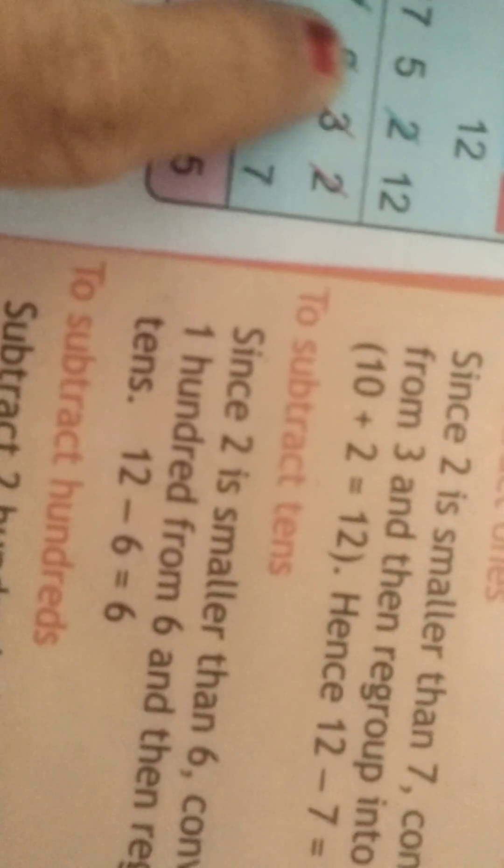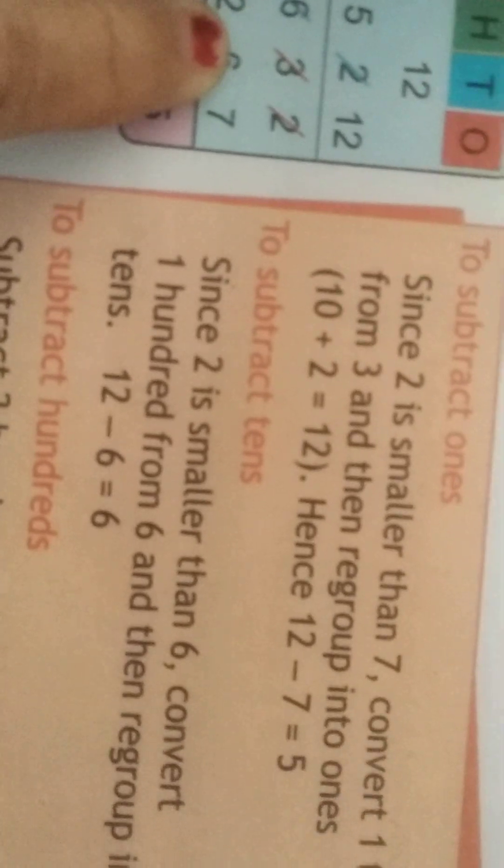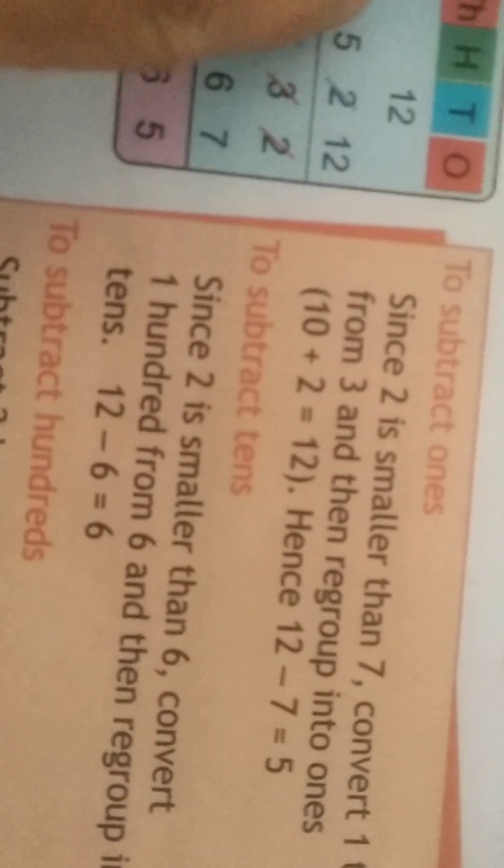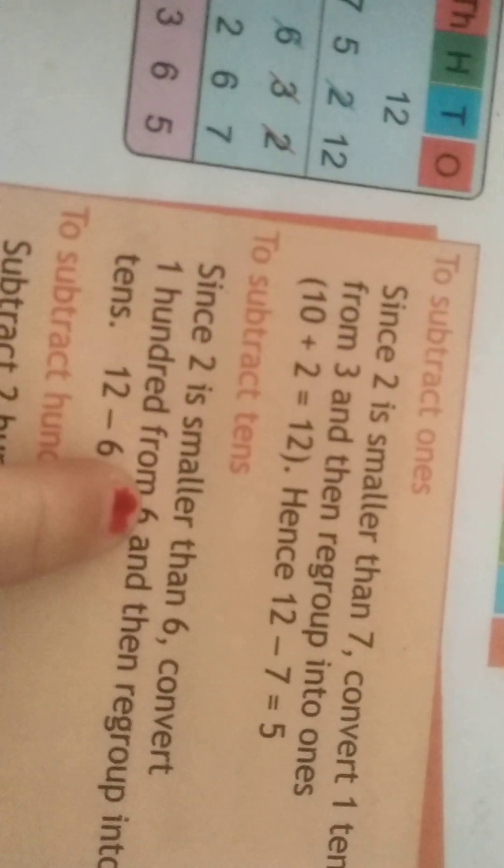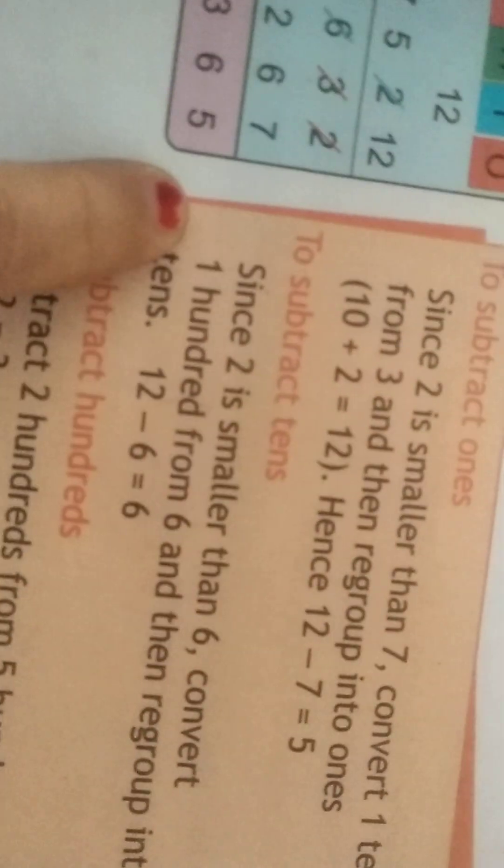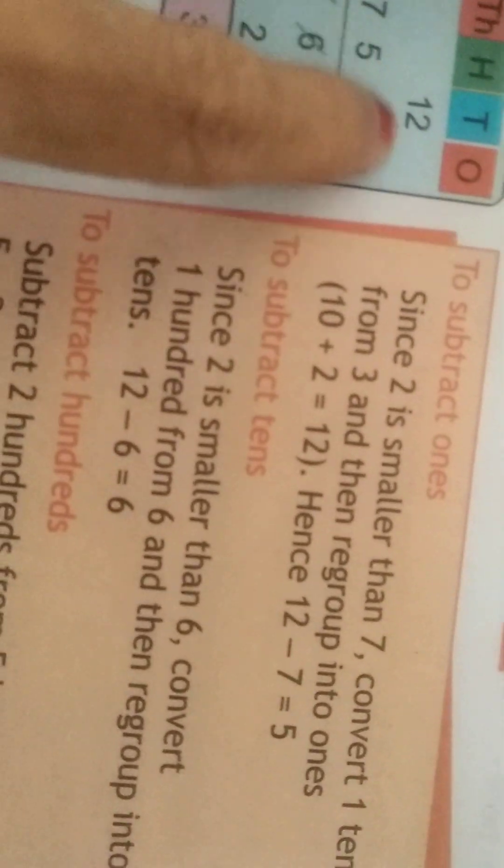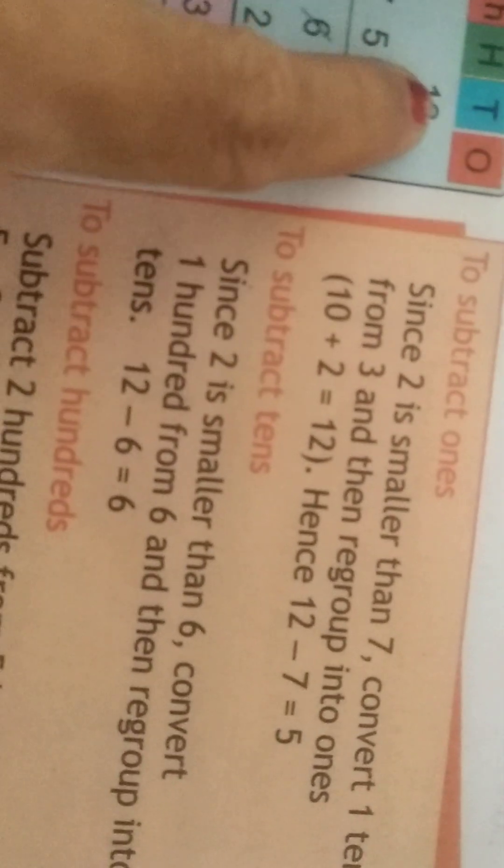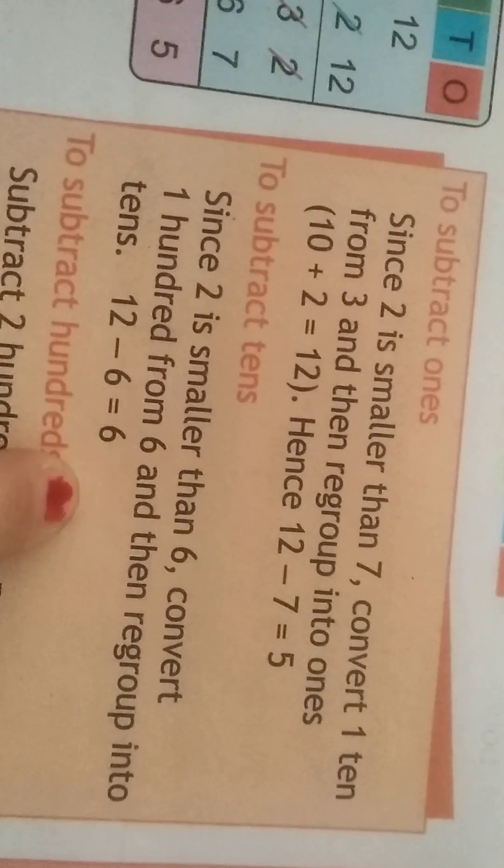To subtract tens, since 2 is smaller than 6, convert 1 hundred from 6 and then regroup it into tens. 1 hundred regrouping into tens gives 10 plus 2, which equals 12. 12 minus 6 is 6.